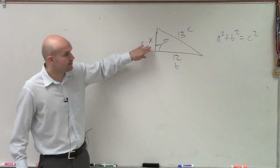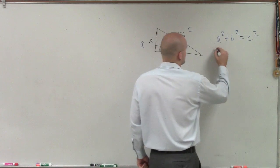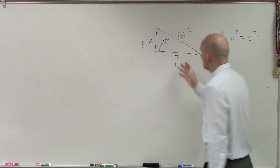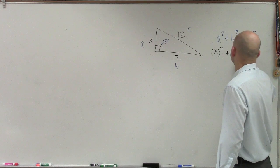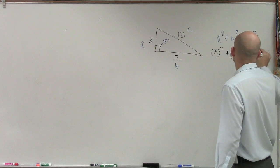So now, well, we don't know what A is, so we'll plug that in as X squared. B is 12 squared equals 13 squared.